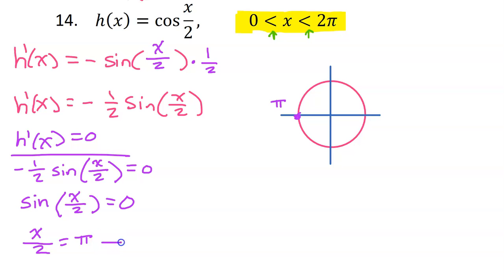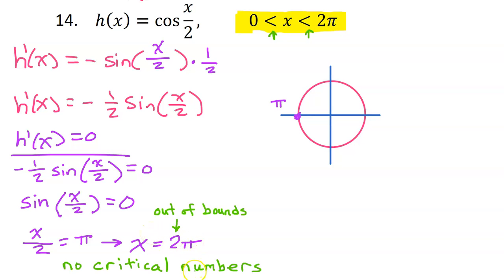Multiplying both sides by 2, we get x equals 2 pi. But we just said that 2 pi is out of bounds — we have to stay strictly less than 2 pi. That means there are actually no critical numbers between 0 and 2 pi.